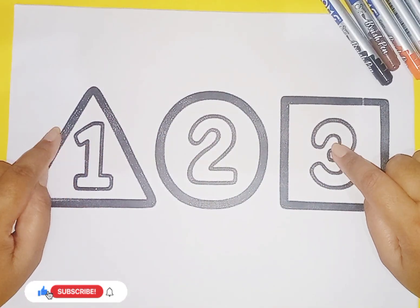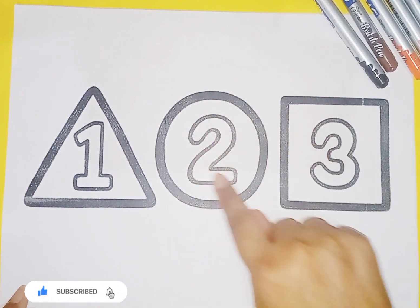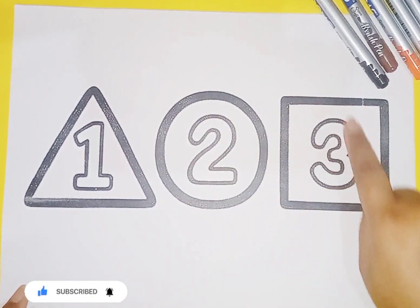So kids, now we learn shapes and numbers. Triangle number 1, circle number 2, square number 3.